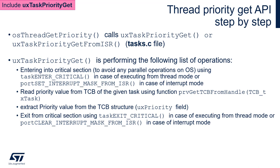Let's have a closer look at the function used to get the priority of a task. Within CMSIS OS v2, we have the function osThreadGetPriority, which returns the priority value of the given task passed as an argument. This function calls uxTaskPriorityGet or uxTaskPriorityGetFromISR, depending on whether we are calling it from a task or from an interrupt. This is one of the advantages of the CMSIS OS API — you don't need to select the proper function yourself; the recognition of whether we are in a task or an interrupt is done automatically by the function itself.